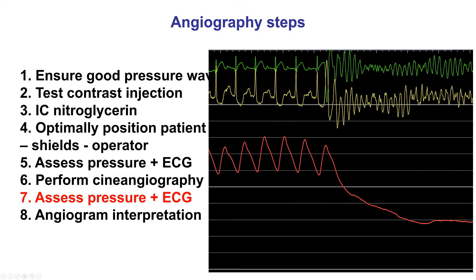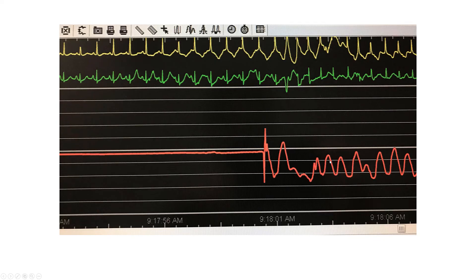The seventh step after the angiogram is performed is to once again look at the EKG as well as the pressure waveform, because sometimes complications can happen. This is an example of ventricular fibrillation happening after coronary angiography — if that happens, one needs to be aware and correct it immediately with defibrillation. Sometimes injecting contrast can cause some transient EKG changes, but it is important to ensure they are transient and there is no issue with coronary flow, such as acute coronary vessel occlusion due to dissection.